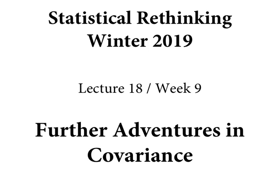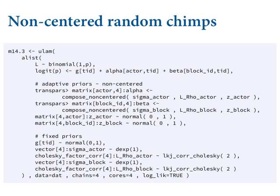Today we finish up introduction to varying slopes, and then I'm going to show you how those same concepts allow you to do different kinds of models. To remind you where we were before, we had specified this complicated random slopes and random intercepts model for the chimpanzees data, then we were re-specifying it because we had a bunch of divergent transitions. I wanted to show you how to do the non-centering reparameterization when you had random slopes.